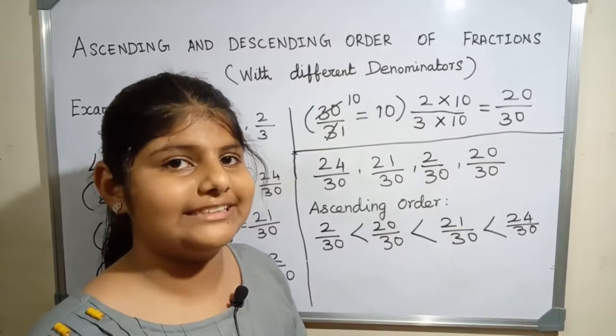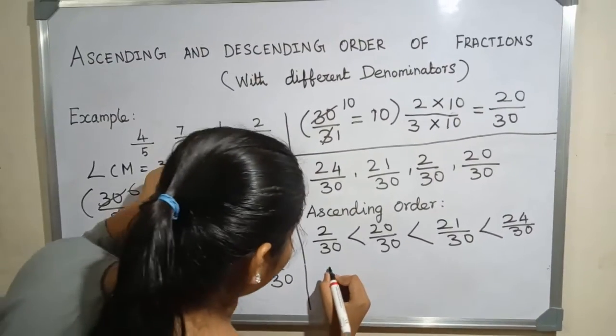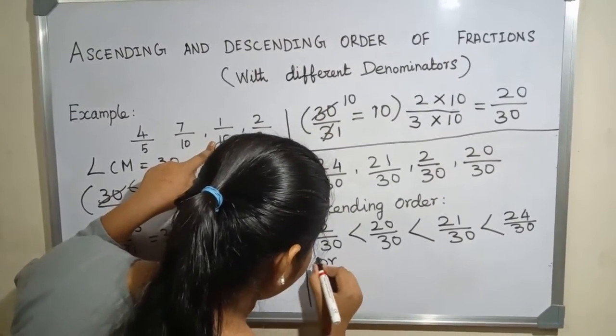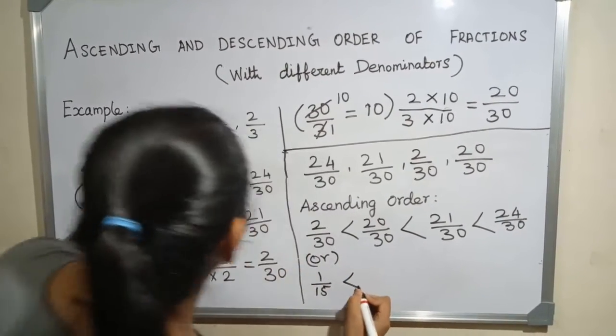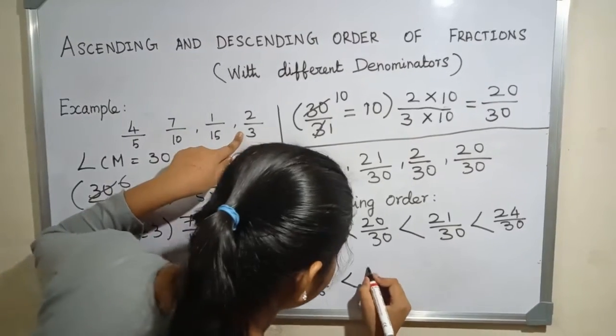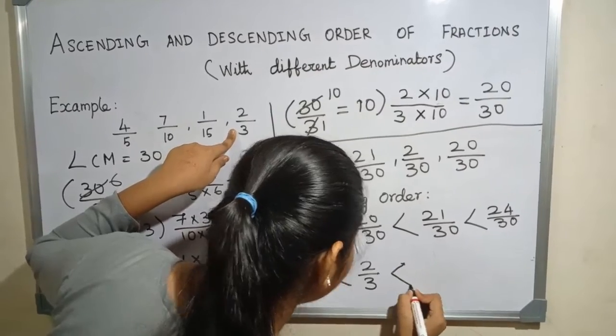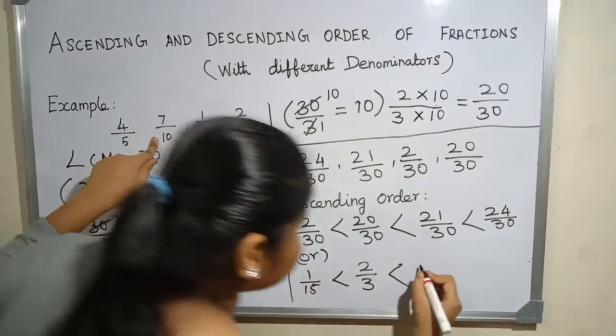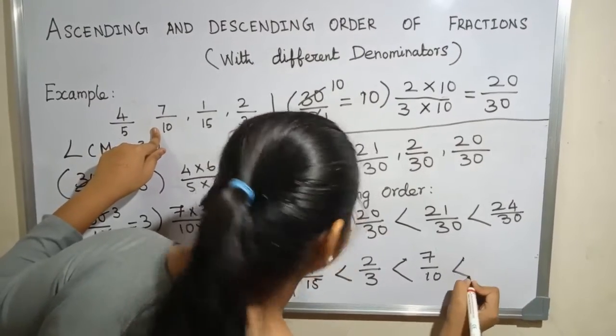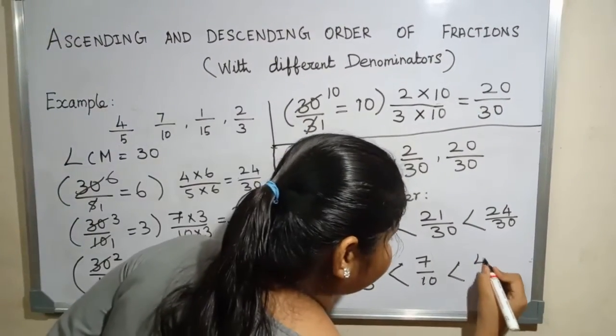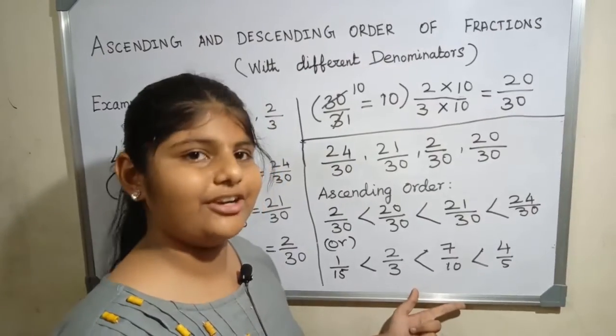Also, let us arrange the given fraction. 1 by 15, 2 by 3, 7 by 10, 4 by 5. This is the ascending order of the given fraction.